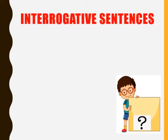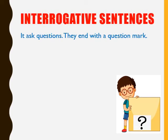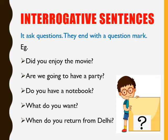Sentences which ask questions are called interrogative sentences. They always end with a question mark. For example: Did you enjoy the movie? Are we going to have a party? Do you have a notebook? What do you want? When do you return from Delhi? Interrogative sentences end with a question mark.